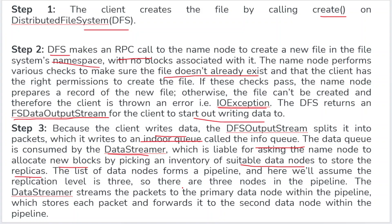When writing a file, I also need to create two more duplicate copies (replicas). The data streamer finds suitable data nodes for those copies. The list of data nodes forms a pipeline. By default, the replication factor is 3, so there are three nodes in the pipeline. The data streamer streams packets to the primary data node, which stores each packet and forwards it to the second data node, and then to the third data node.